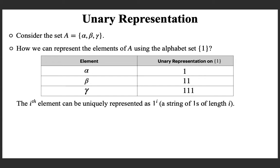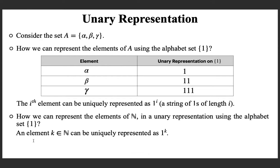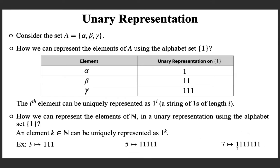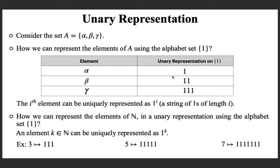Now, can you extend it? How can we represent the elements of natural numbers — which is an infinite set — in unary representation using the alphabet {1}? Given any natural number k, it can be uniquely represented by a string of ones of length k, or 1^k. For example, 3 is represented as three ones, 5 as five ones, and 7 as seven ones. If you are given ten ones, that represents the number ten.